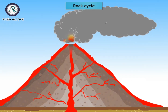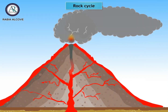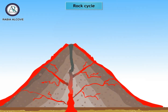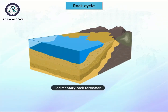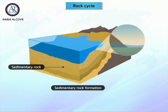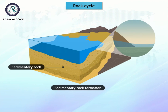To begin with, igneous rock is formed by magma present inside and on the surface of the earth. Over time, igneous rocks are broken into smaller particles by agents of erosion like wind, rain, and running water.